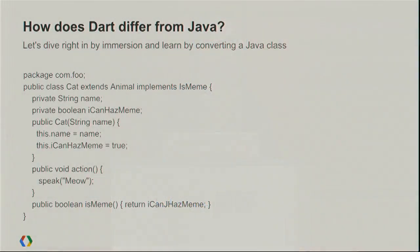Dart has the option of running either natively in the Dart VM or in any other browser by using a Dart-to-JS compiler, which compiles to JS just like GWT. So let's dive right in. Rather than teaching a language spec, I'm going to start off with Java and try to transmogrify it into Dart.